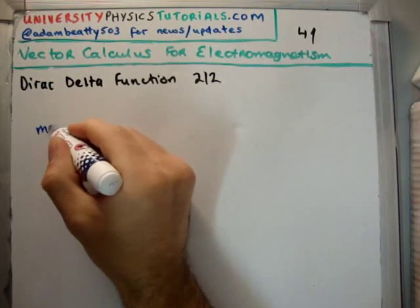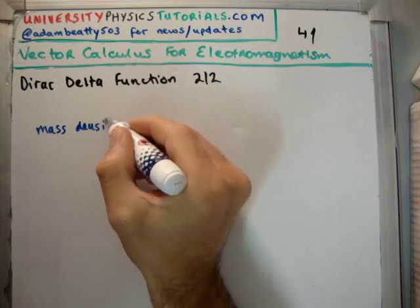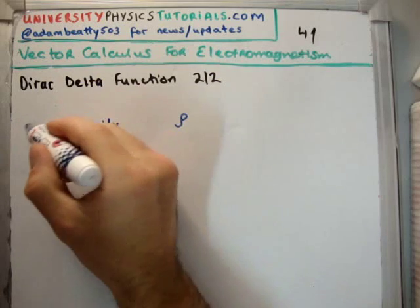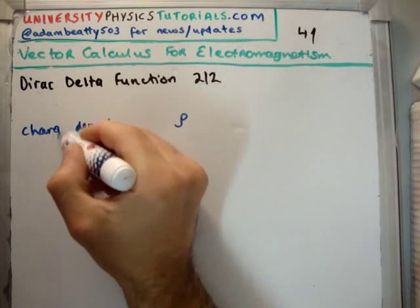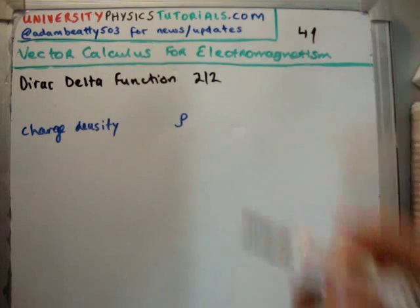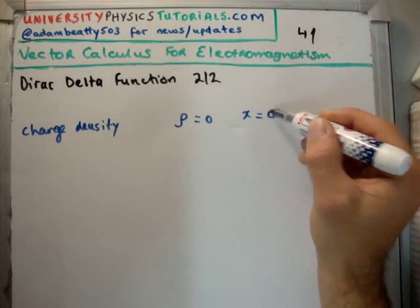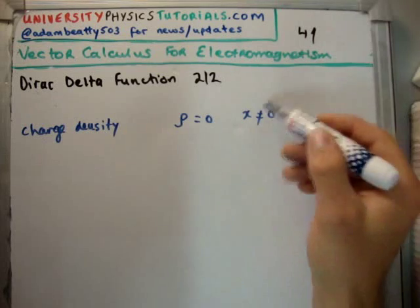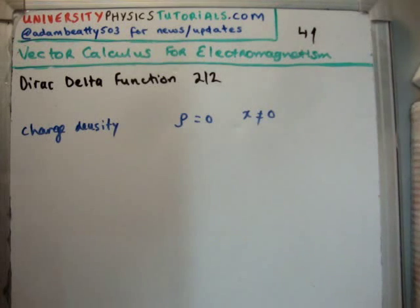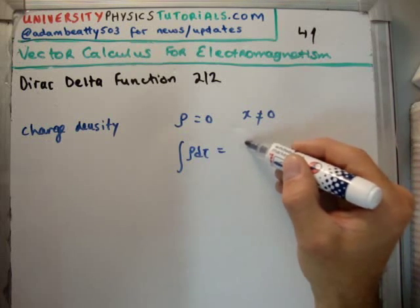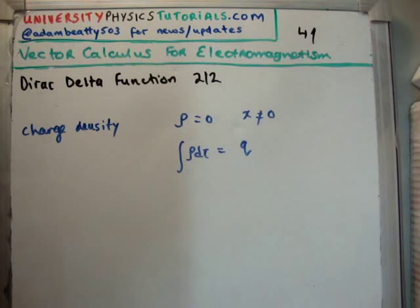Let's look at charge density. The charge density is 0 for a point charge at the origin, unless you're at the origin. So, if you're not at the origin, the charge density equals 0. But if you integrate the charge density across all space, you're going to get a finite number. You're going to get the charge. So, we're finding here a function which is 0, unless you're at the origin, yet it integrates to a finite number.